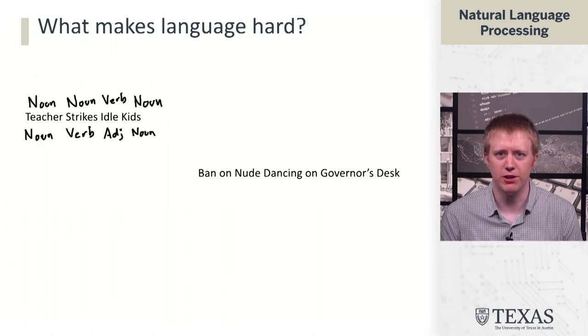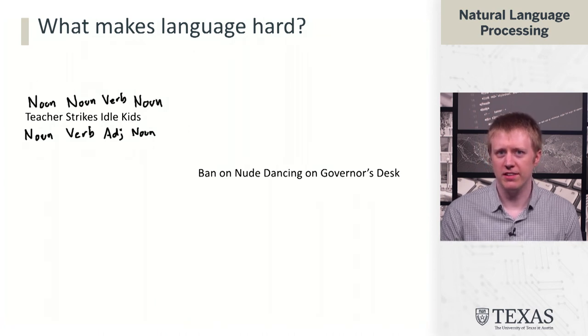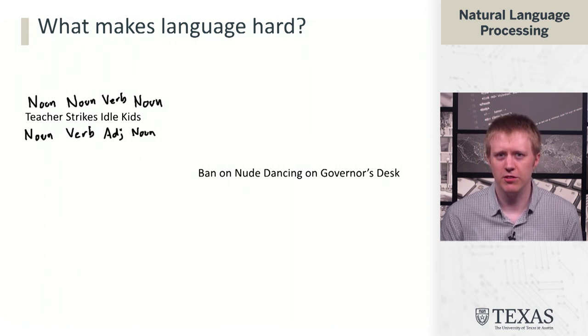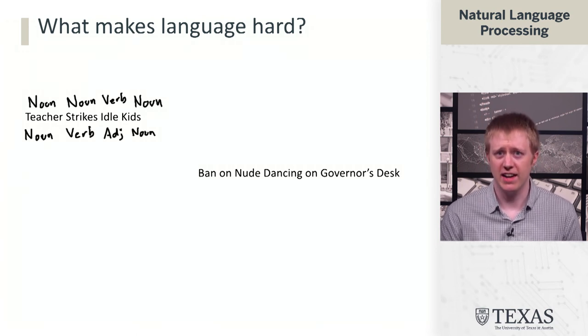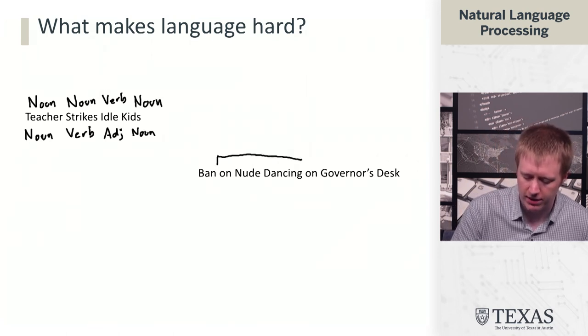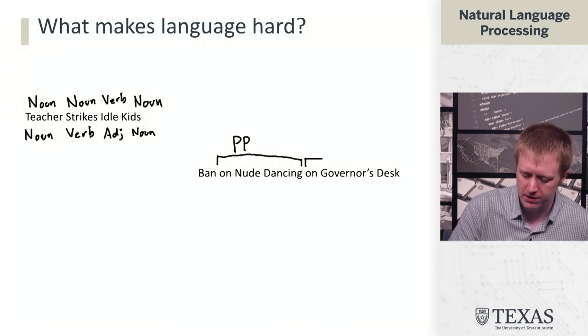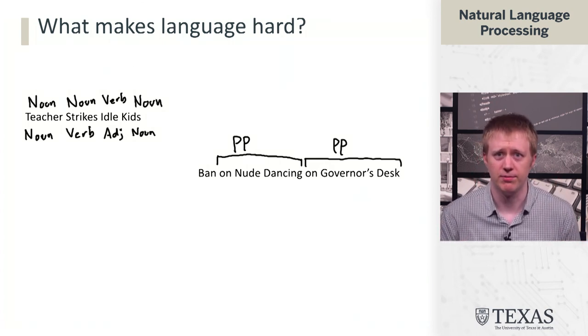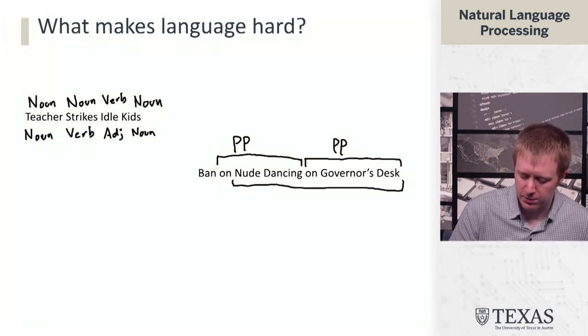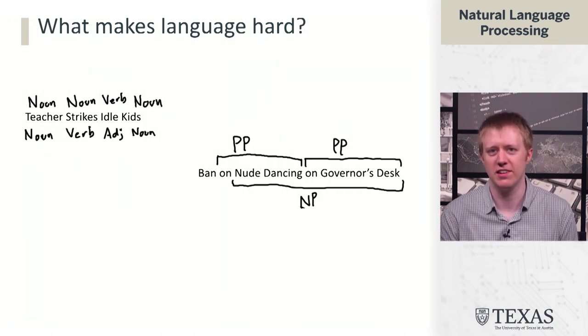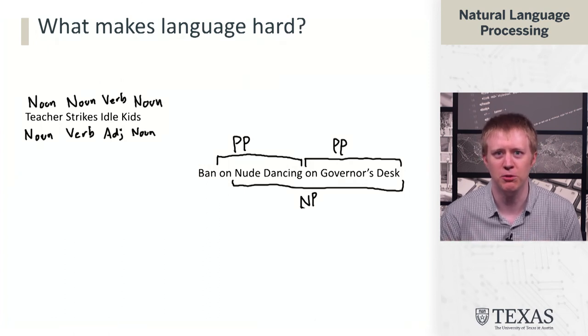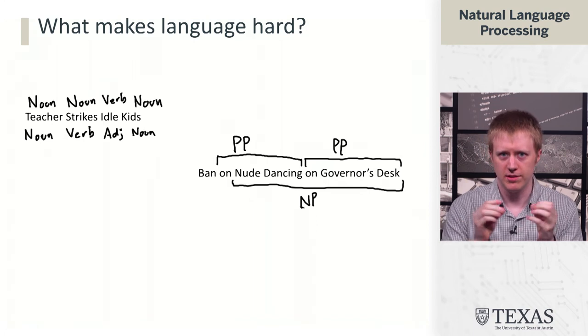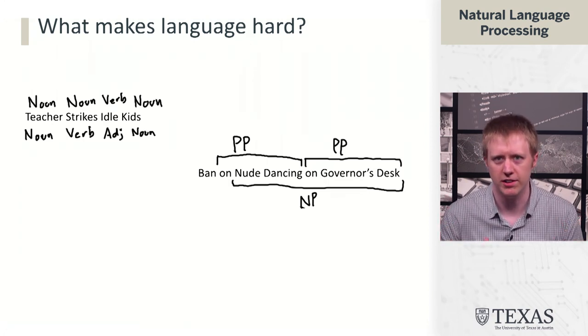'Ban on nude dancing on governor's desk.' We can think about this in the context of the last example. What are the parts of speech here? It turns out that actually the parts of speech aren't really that ambiguous in this case. What's ambiguous is the syntactic structure. What the author intended is that we have two prepositional phrases here. We have a ban that is on nude dancing, and that ban on nude dancing is on the governor's desk. But the sort of funny interpretation is that we actually have this noun phrase concept of nude dancing taking place on the governor's desk. They would probably want to ban that too. The ambiguity in this case is a higher level syntactic one of how these different pieces compose. It's not a low level part of speech ambiguity, but instead one that we're going to have to understand syntactic parsing in order to deal with.